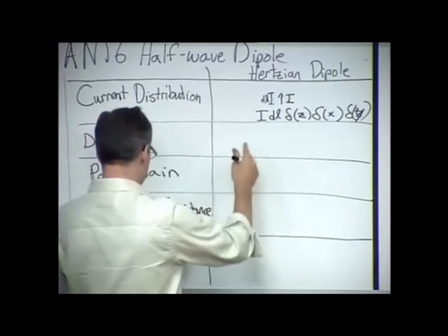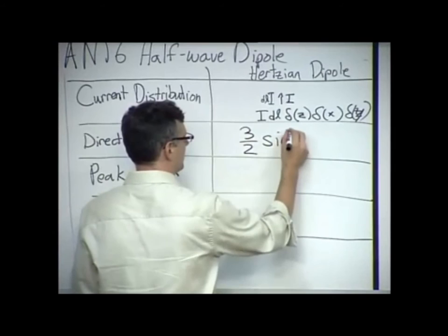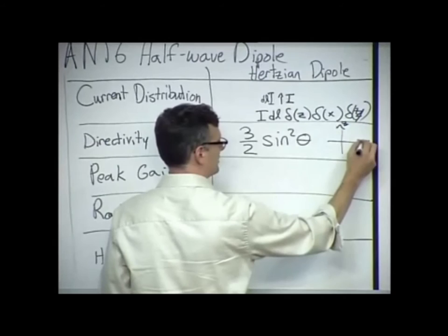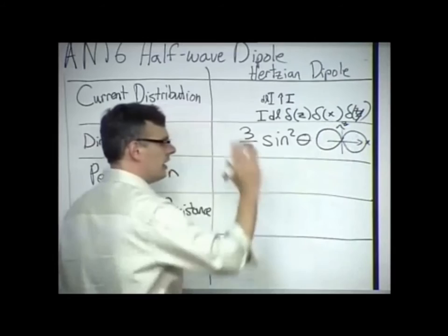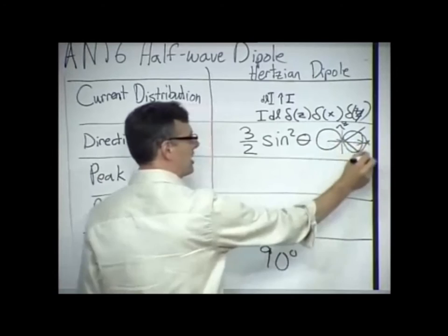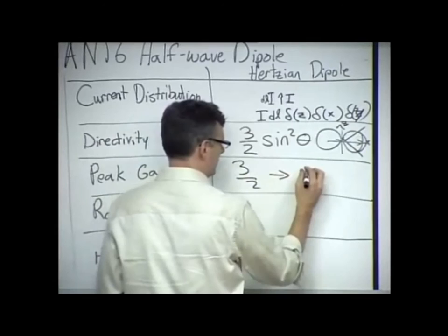We said the directivity, we solved for that in class. That came out to three halves sine squared theta. It was a donut. If I took a cut of that pattern, if I looked at the gain and plotted it in a polar plot, I would see two dumbbells. The half-power beam width, we said, was 90 degrees. And the peak gain is along the horizon. It's a peak gain of three halves. Normally, peak gain is given in the dB scale, so that would be 1.8 dBi, dB with respect to isotropic.